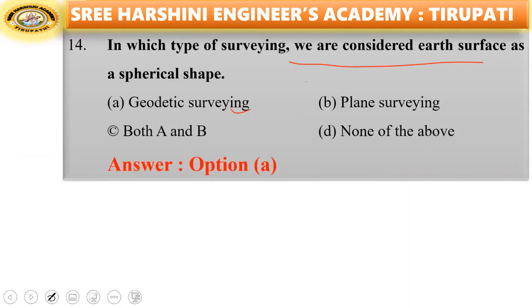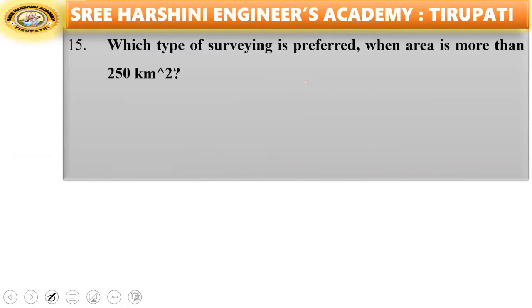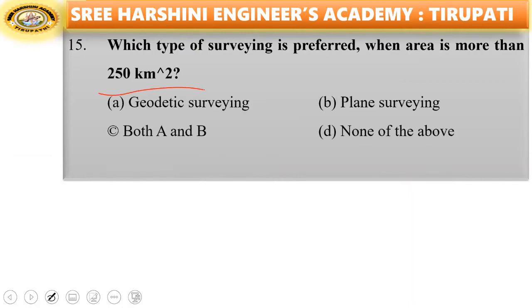In geodetic surveying, the surface is considered as a spherical shape. Next question: which type of surveying is preferred when the area is more than 250 square kilometers? Options: geodetic surveying, plane surveying, both A and B. Geodetic surveying is preferred.